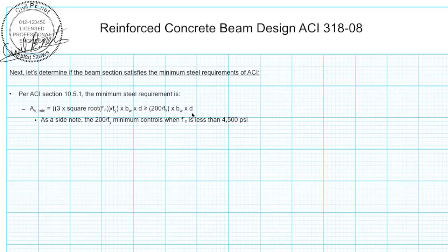As a side note, that 200 over f sub Y, if you set that equal to 3 square root f'c over f sub Y, you'll find that 200 over f sub Y will control when you have a concrete stress a little less than 4500 PSI, approximately 4,444 PSI. Basically anything less than 4500 PSI, you're going to want to check that too.